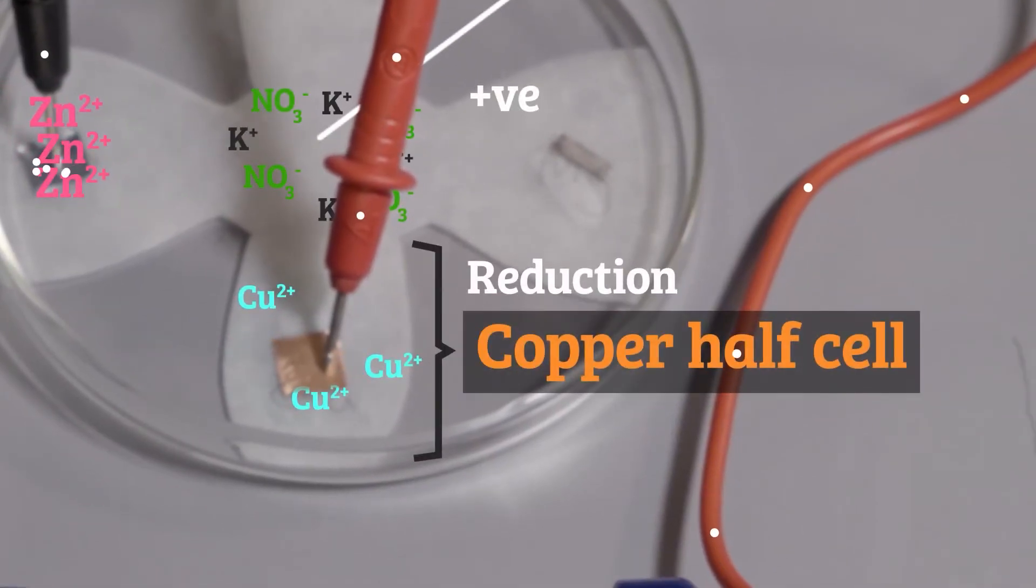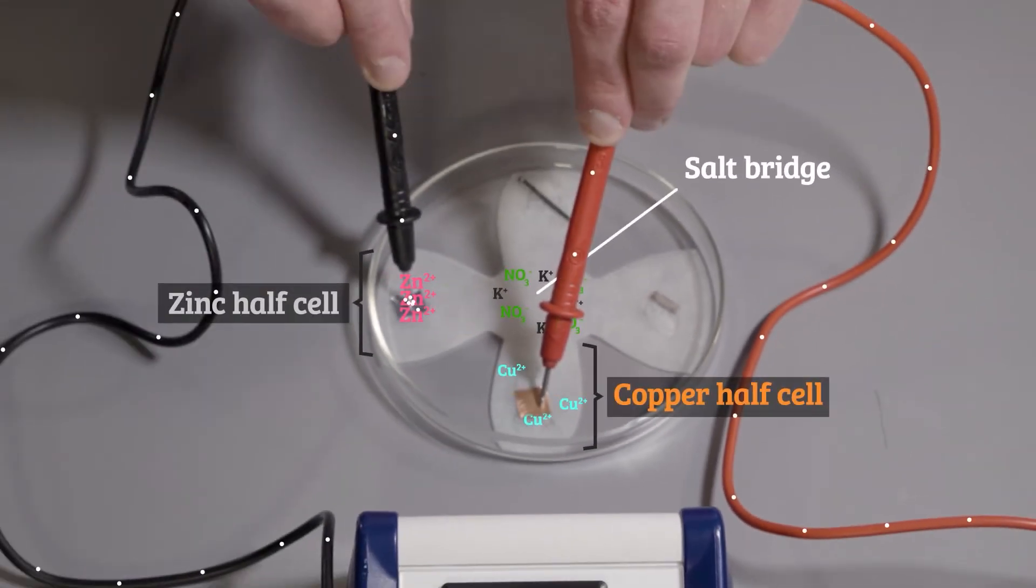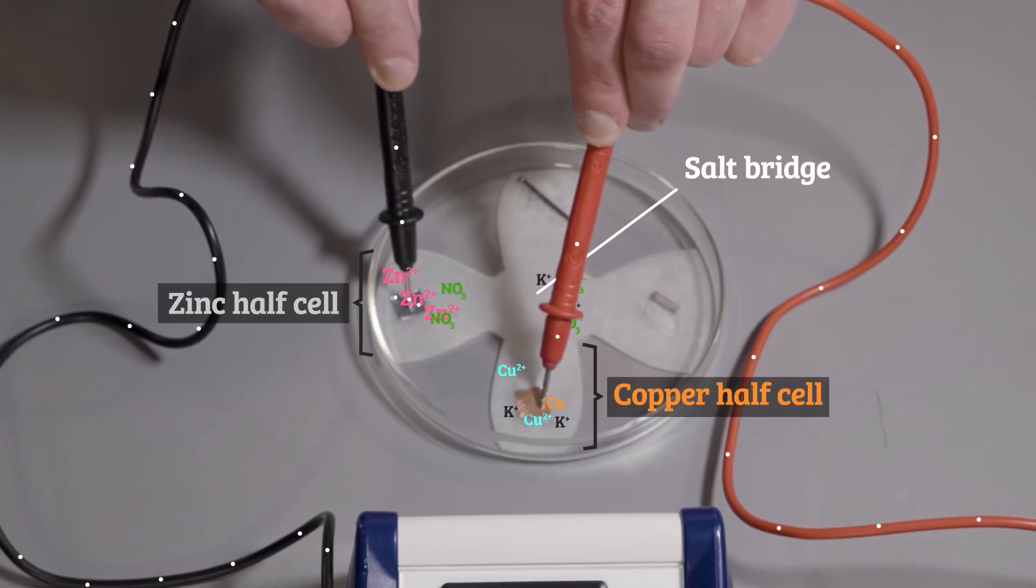The copper half cell is more positive than the zinc so electrons flow into the copper half cell. Copper ions are reduced. Ions flow from the salt bridge to keep the charge of the solution neutral.